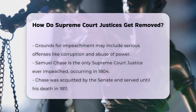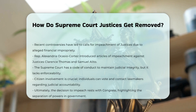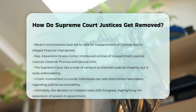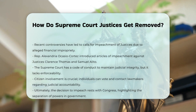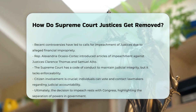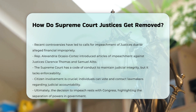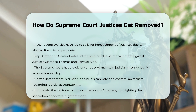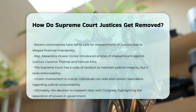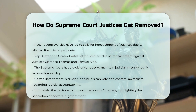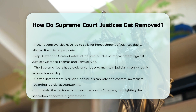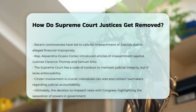Judicial integrity and ethics: The Supreme Court has implemented a code of conduct to address concerns about its credibility, although these regulations lack enforceability. The importance of maintaining judicial integrity and ethical standards is underscored by the rare but significant actions of impeachment. Citizens can influence the process by voting for politicians who support their views on judicial accountability and by contacting their lawmakers to express their opinions on the matter. However, the ultimate decision rests with Congress.